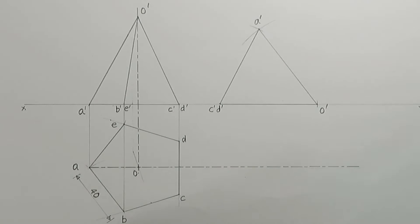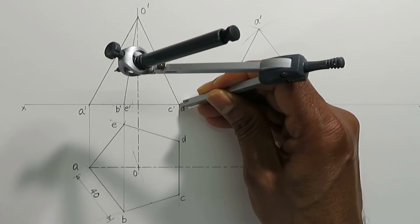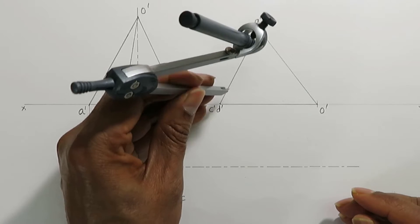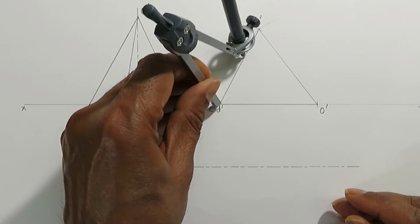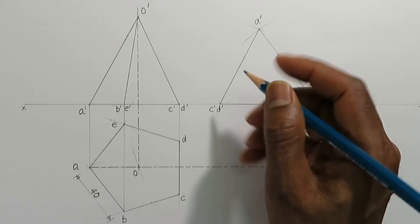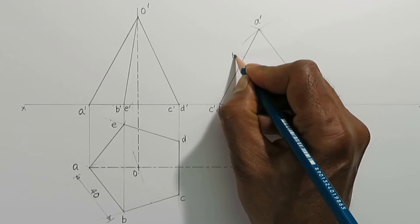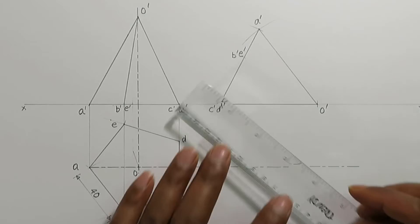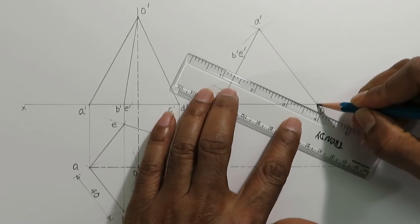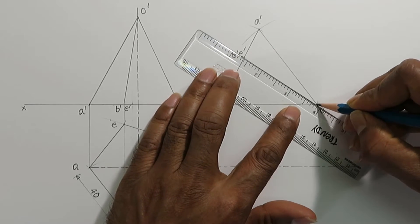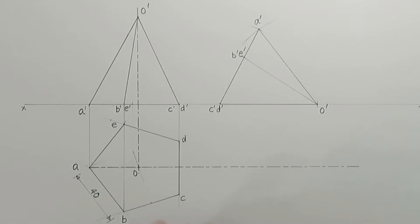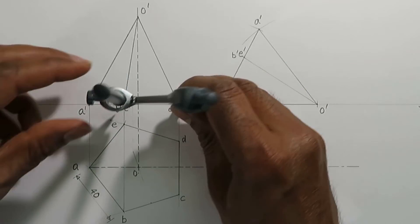Similarly, draw the other edges. You can see the edge front view and the center line.